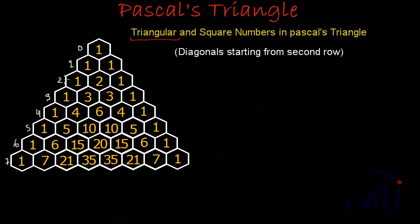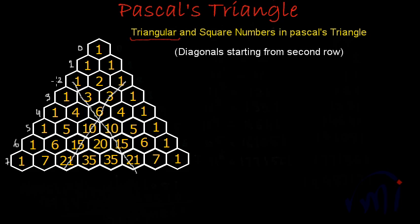If we talk about the diagonal starting from row number two, these are the two diagonals. First we are going to find triangular numbers in these diagonals. Both of them are the same diagonal. The elements of this diagonal are 1, 1, 3, 3, 6, 10, 10, 15, 15, 21, 21. So these two diagonals are exactly the same.